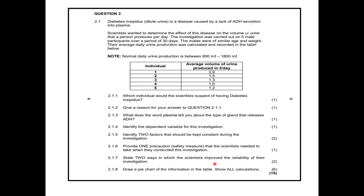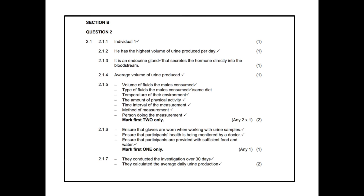Then question 2.1.8 asked you to draw a pie chart for the information in the table. Let's look at the memo for section B. We can see who had the condition: individual one — he had the highest volume of urine produced. Endocrine gland — the hormone is directly released into the blood. Average volume of urine produced is the dependent variable. For the fixed variables: same person doing the measurement and same method of measurement.